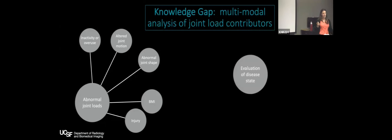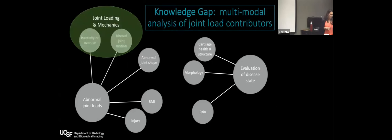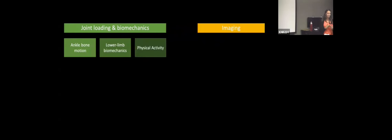We can evaluate different states of the disease using cartilage health and structure — T1-Rho and T2 — as well as morphology, pain, and patient-reported outcomes. I've grouped the analysis into joint loading and mechanics, quantitative imaging, and patient history and demographics. Today we'll focus on joint loading and biomechanics as well as imaging. My work has focused on ankle bone motion using biplane fluoroscopy, lower limb biomechanics using skin marker motion analysis, and physical activity using inertial measurement units. On the imaging side, I've focused on quantitative MRI as well as positron emission tomography MR.